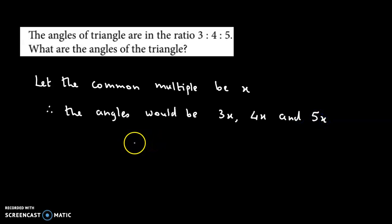Now we know that the sum of the measures of angles of a triangle is 180 degrees. Therefore, we could say 3x + 4x + 5x = 180°.